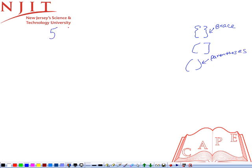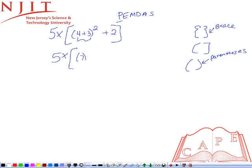Say I give you this problem: 5 times bracket, parentheses 4 plus 3, squared, plus 2. Using the order of operations, please excuse my dear Aunt Sally. What we must do first is the parentheses. So 5 times bracket 4 plus 3 gives you 7. So 7, and don't forget the second power, plus 2.